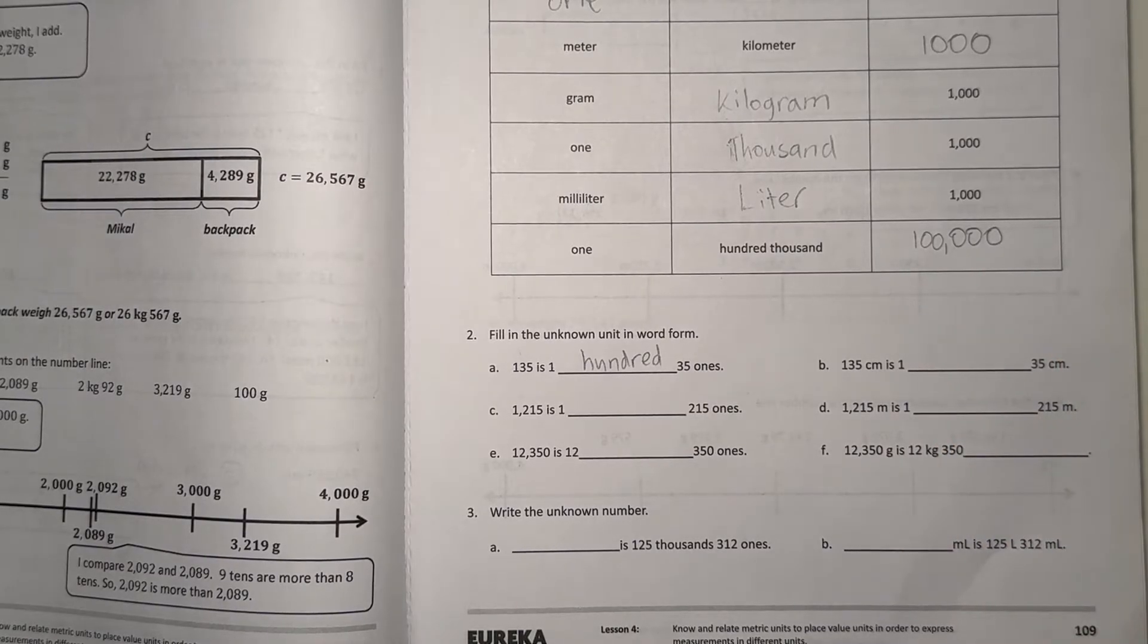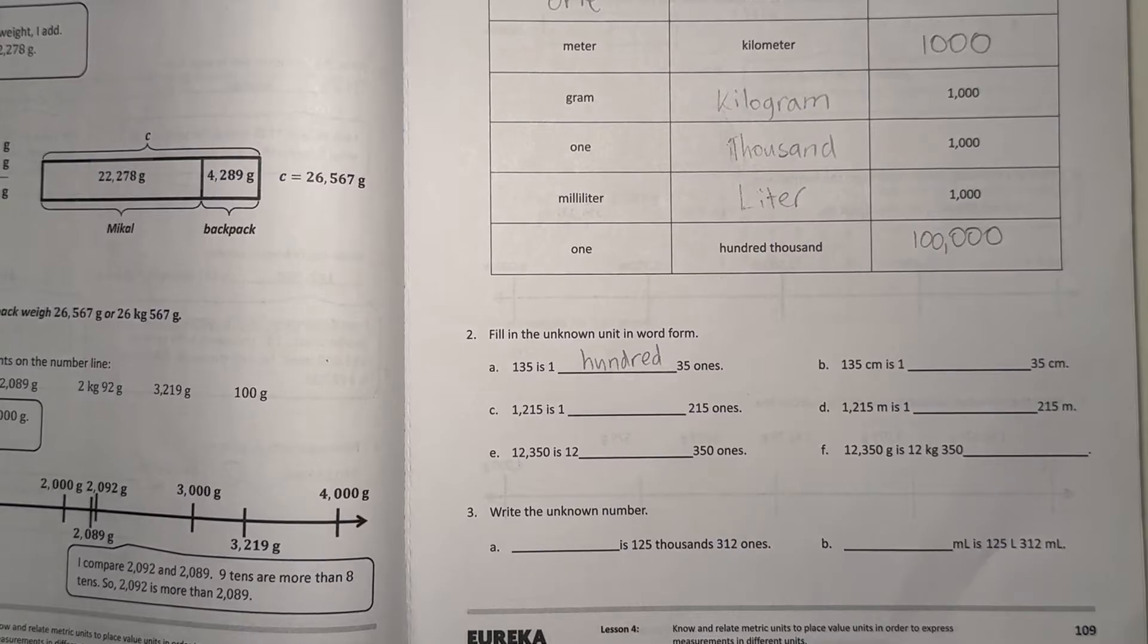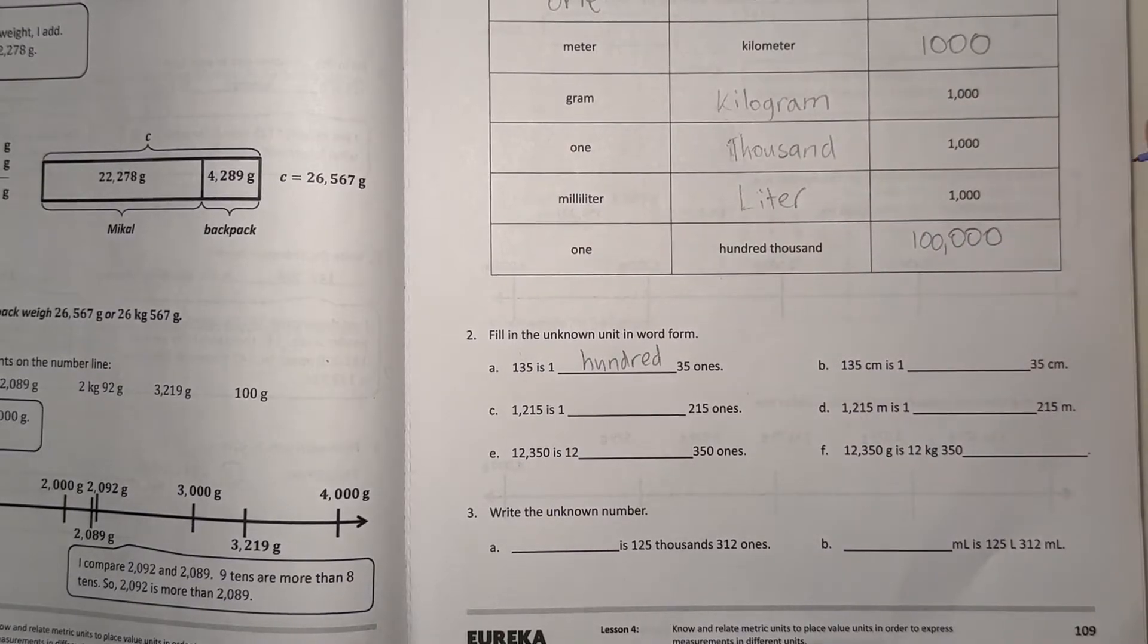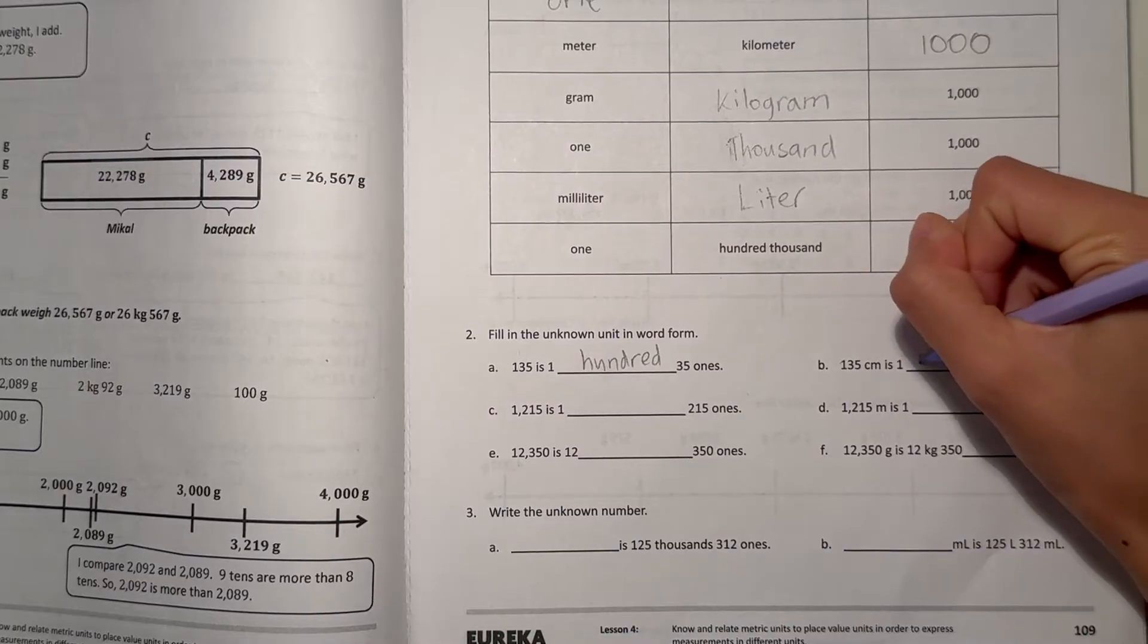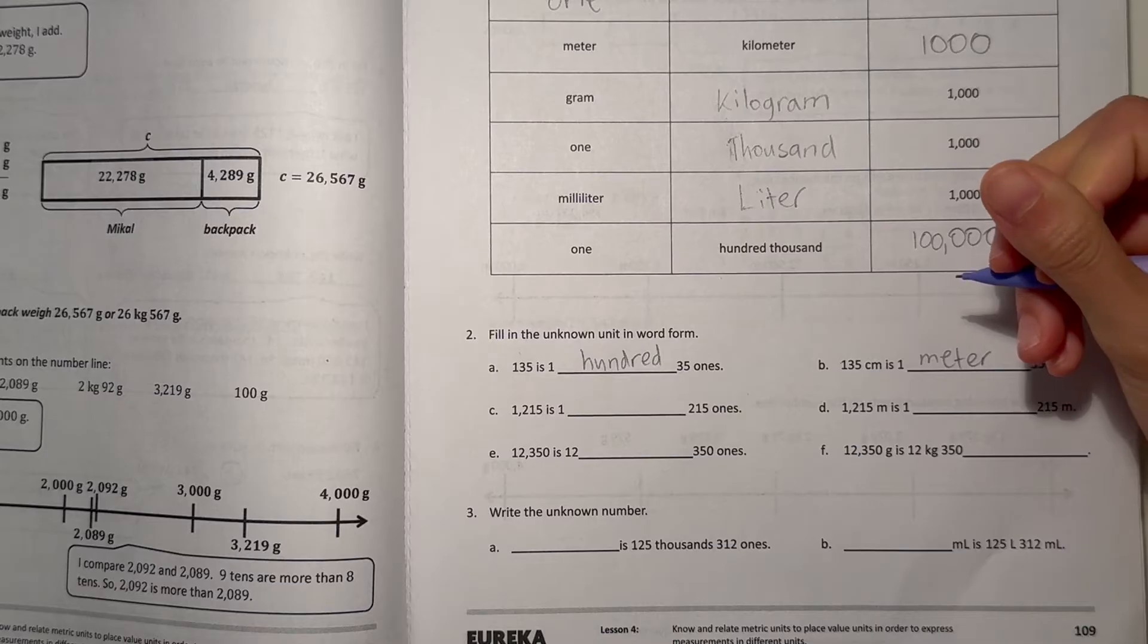And B, we have 135 centimeters equals 1 something 35 centimeters. So this can't be 1 centimeter because 1 centimeter would just be 1, and then 1 plus 35 is 36 centimeters. But no, our number here is 135 centimeters. So we know there's 100 centimeters in a meter. So once you get to that 100, there's 1 meter, 35 centimeters in this number.